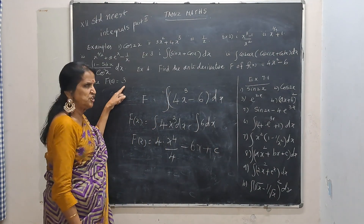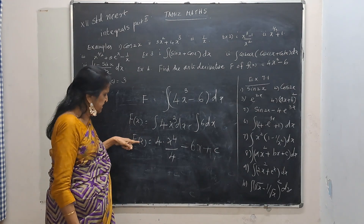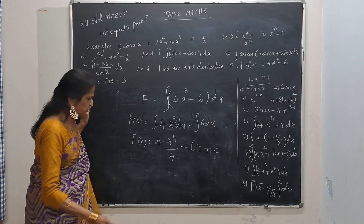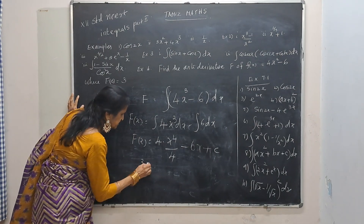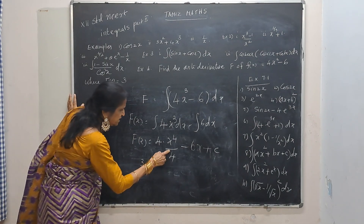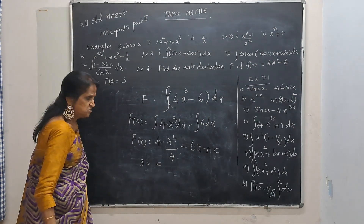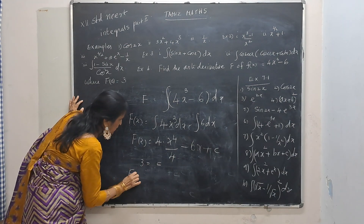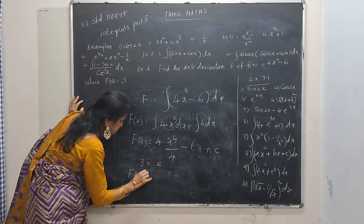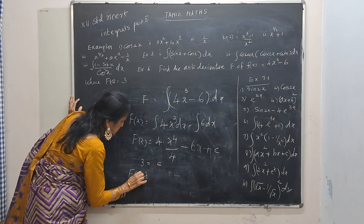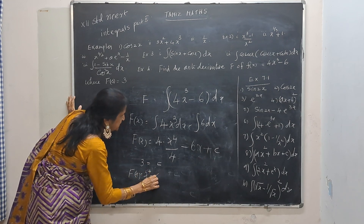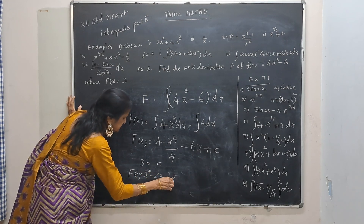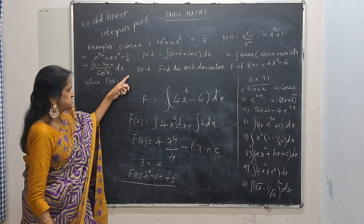When I substitute 0, this is f(0) which equals 3. The x to the power 4 term gives 0, and the 6x term gives 0, so that leaves c equals 3. So f(x) is x to the power 4 minus 6x plus 3. This will be the answer for this.